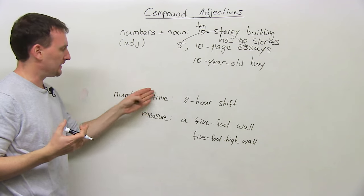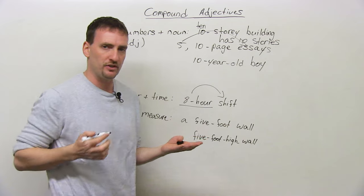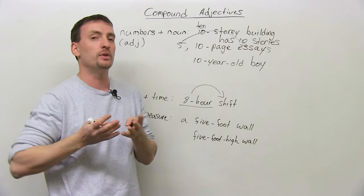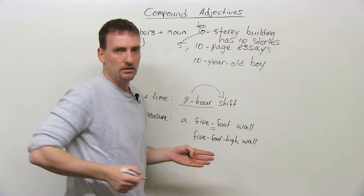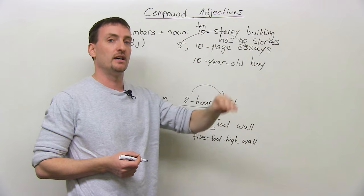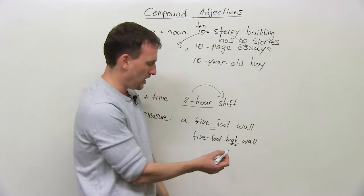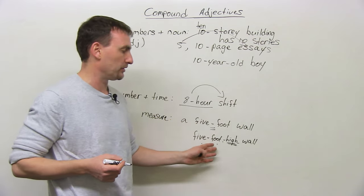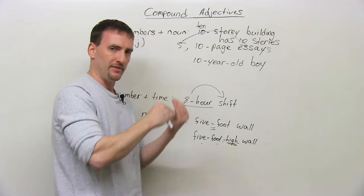The same rule applies for number plus any unit of measure — time, length, weight, etc. 'I have to work an 8-hour shift today' — '8-hour' is a compound adjective for the shift. Or 'a 5-foot wall' — before the noun, use 'foot' (no plural), with a hyphen. After the noun: 'that wall is 5 feet high.' If you add 'high' before the noun, you get a three-word compound adjective with two hyphens: '5-foot-high wall.'